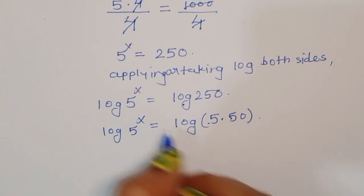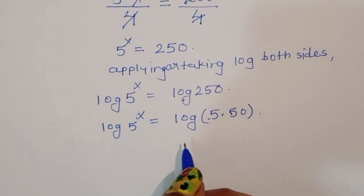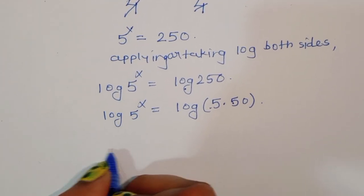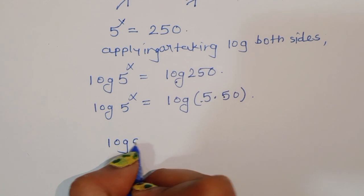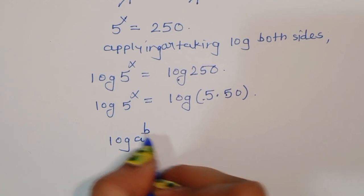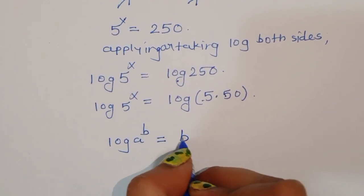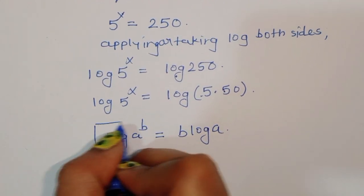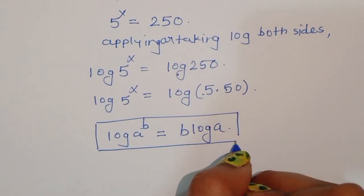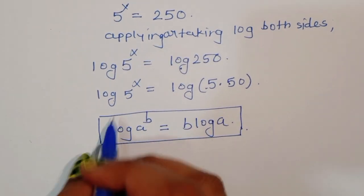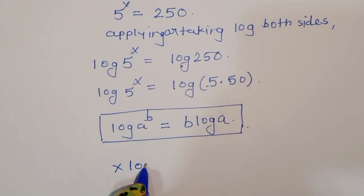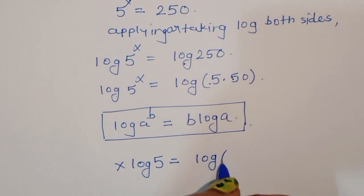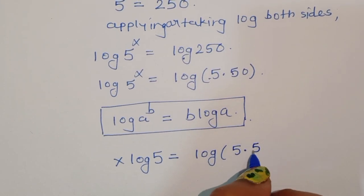For log of 5 power x, we can use the formula: log of a power b is equal to b times log of a. Using this formula, we get x times log of 5 is equal to log of 5 times 50.